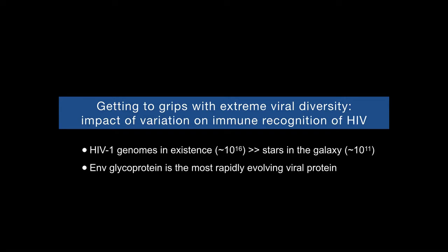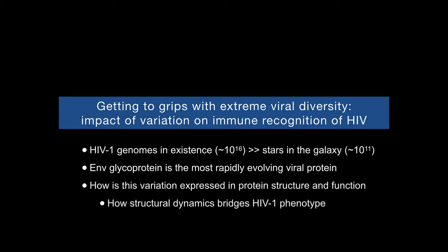The part of the HIV virus that evolves most rapidly is the envelope surface glycoprotein on the outside. This is really a crucible for genetic evolution in the virus. What I'd like to talk about today is to understand how that genetic variation is actually manifested in the structure, and then what is the impact on the phenotype of the virus and how it's perceived by the immune system.